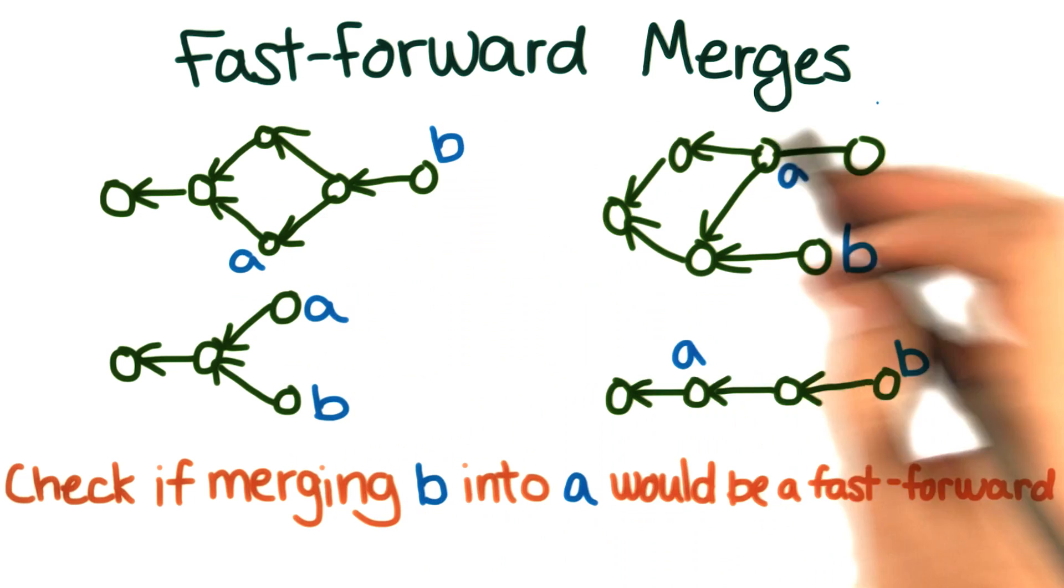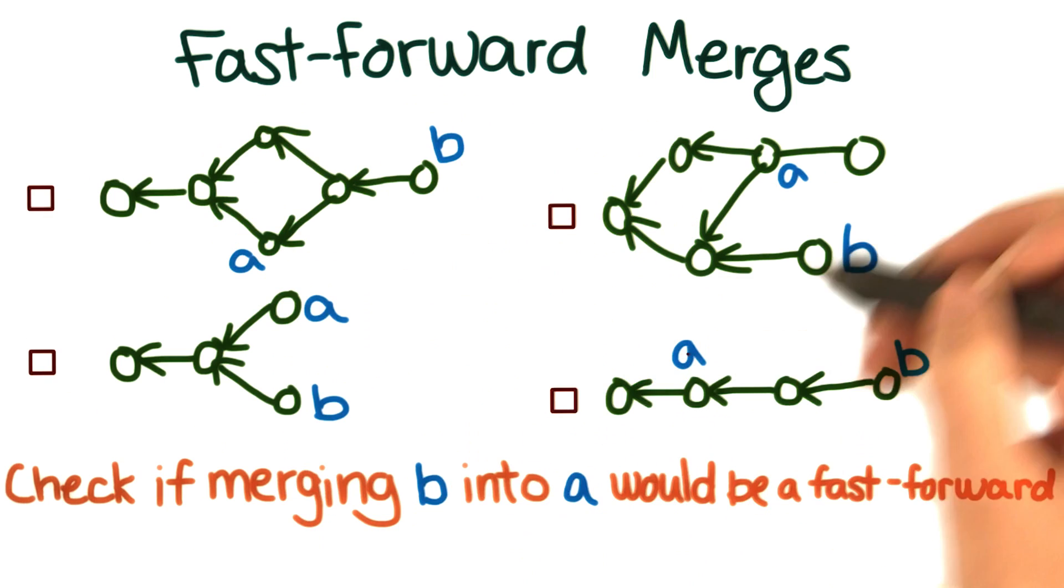Take a look at these commit histories. Check the box next to each diagram where merging branch B into branch A would result in a fast forward merge.